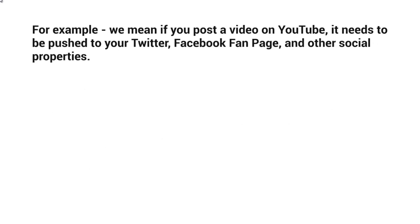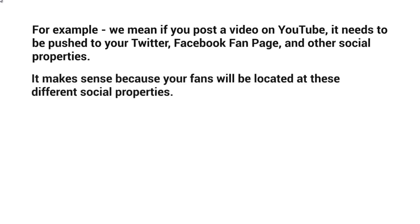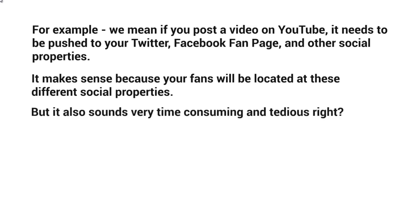You're basically interlinking everything together. For example, you post a video on YouTube — it needs to be pushed to Twitter, your Facebook fan page, and other social properties. Because everything is going to be automated, once you do that, it will trigger and automate the whole process. It makes sense because your fans will be located at these different social properties — some people will be at Facebook, some will prefer Twitter, and some will prefer Snapchat or Instagram.